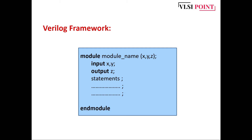After 'module' we need to write the module name, which can be anything — we can give any name based on the circuit. After writing the name, in parentheses we just need to write all the inputs and outputs, meaning the list of ports. Then we have to declare the ports — whether that port is input or output. This is about port declaration.